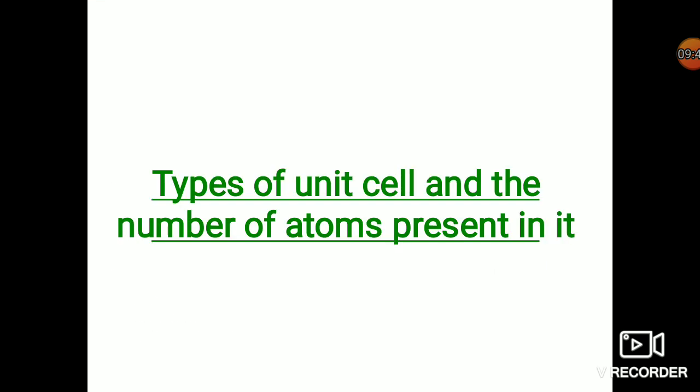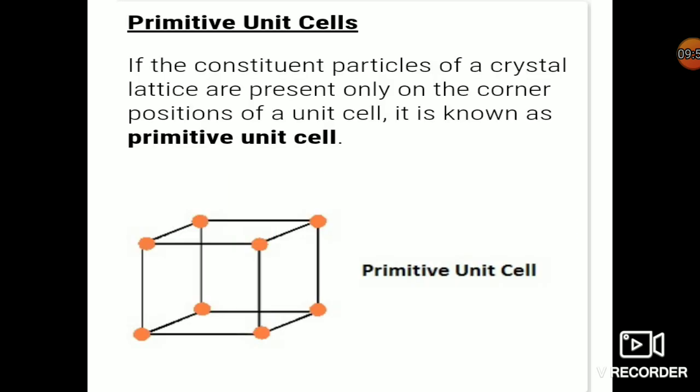Now we'll see the types of unit cell and the number of atoms present in each. The first type is the primitive unit cell — the simplest unit cell possible. Considering a cube-like unit cell, there are eight corners, and we consider one atom at each corner. A primitive unit cell is one where constituent particles are present only at the corner positions of the unit cell.